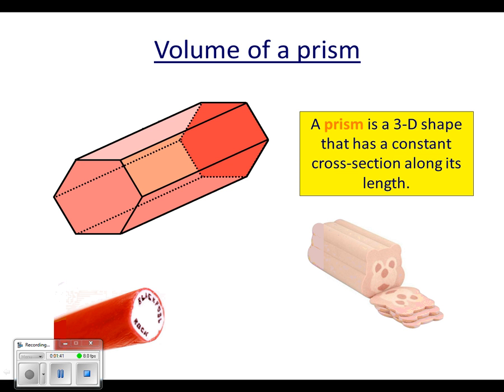And then the same with Blackpool Rock. No matter where you cut that stick of rock, it's always going to say Blackpool Rock. The cross section is constant, therefore it's a prism. Obviously we're not going to find the volume of Billy Bears or Blackpool Rock. We could, but we're not going to.